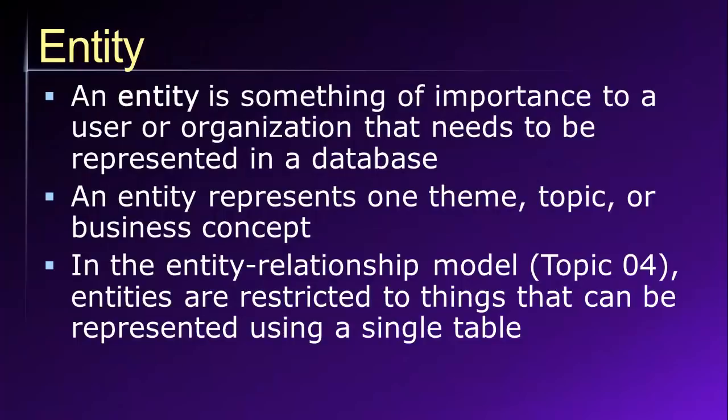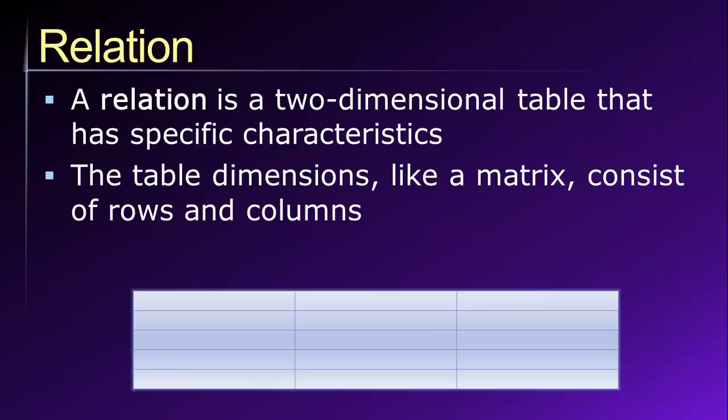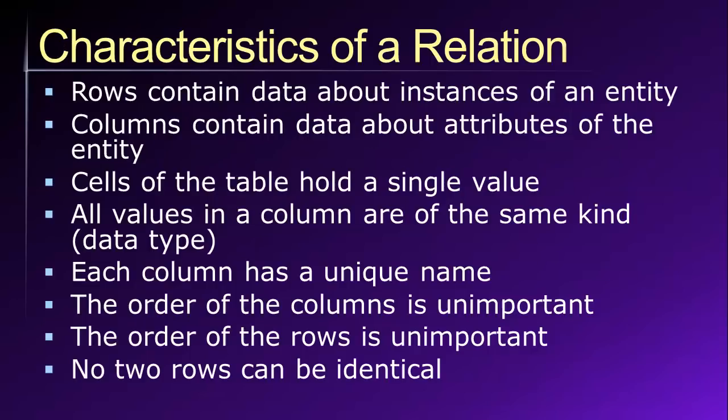Next, I'd like to talk about a concept known as a relation. A relation is a table. If you recall last time, we said that a table is essentially a two-dimensional grid which contains both rows and columns. A relation is a specific type of table — in order for a table to qualify as a relation, the table must have certain characteristics. Let's see what these characteristics are.